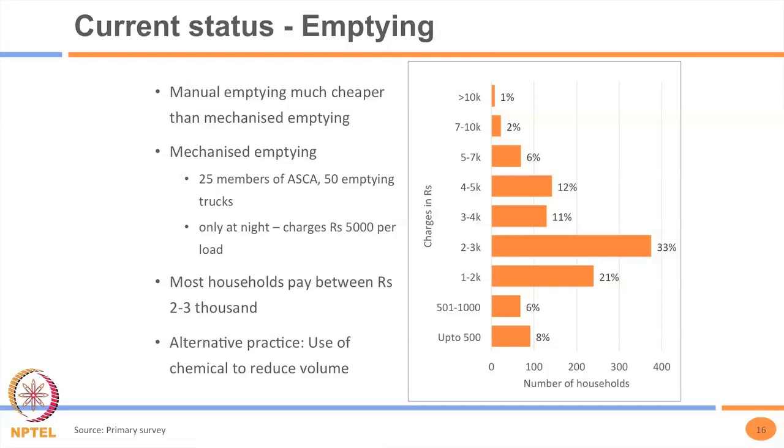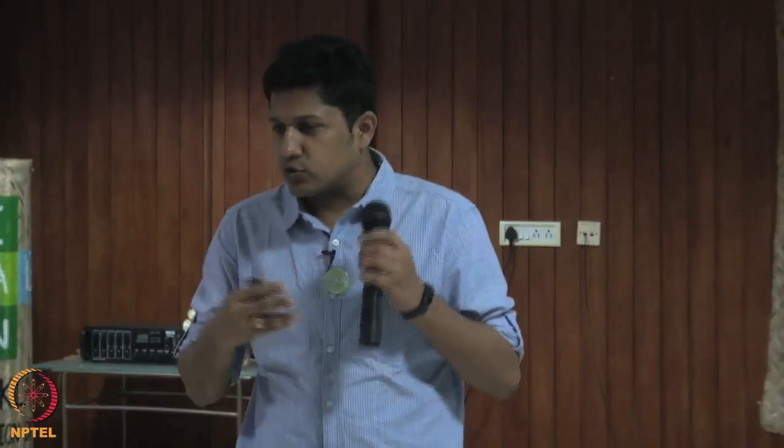This is where we are trying to figure out if we regulate emptiers, can we ensure they charge a fixed amount. There is also an alternative practice not found in literature, observed in both Alapura and Nedumangad — a town near Thiruvananthapuram. Manual emptiers come with a chemical, mix it into the tank, and over a few days the sludge volume reduces to less than half, meaning the tank need not be emptied. We are still trying to determine what the chemical is and whether it is safe or environmentally friendly.